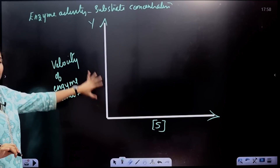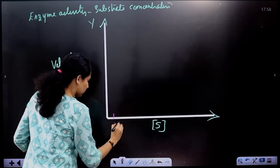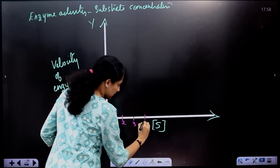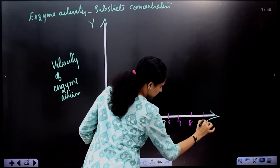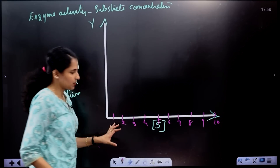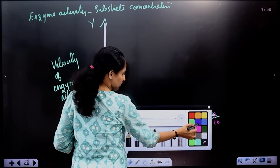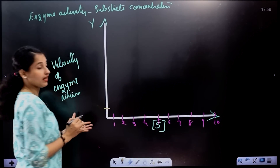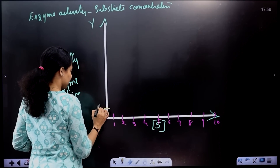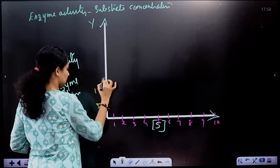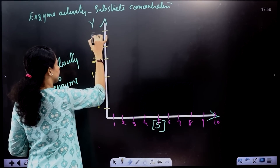So, we are plotting enzyme activity versus substrate concentration. On the x-axis we have substrate concentration, and on the y-axis we take the velocity of enzyme action. We take numbers — 5, 10, 15, 20, 25, 35 on the y-axis.